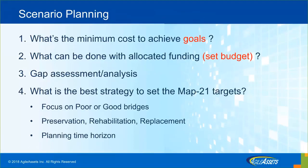Beyond that, there is one more important question: what is the best strategy to set the targets? Questions like — should I focus on poor or good bridges? Poor performance measures or good performance measures? How can I have more preservation over rehabilitation and replacement? And an important one that I see as potentially misleading: the performance period is four years — should we go beyond that? Should the planning time horizon be longer? We all know that bridges deteriorate over longer periods than four or even ten years. We'll see in the case study how this works.